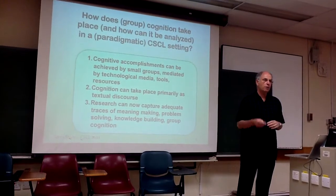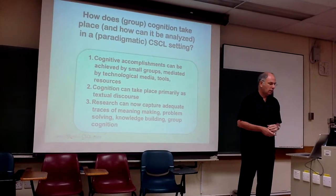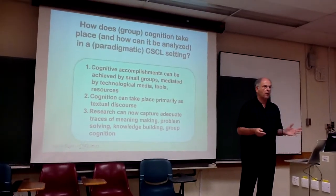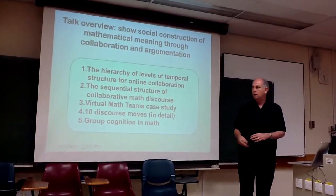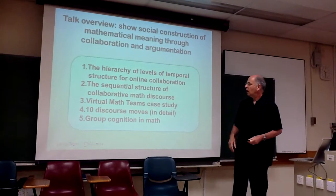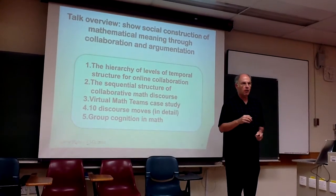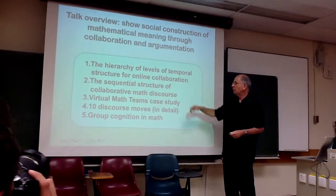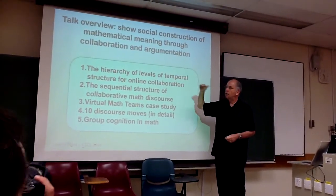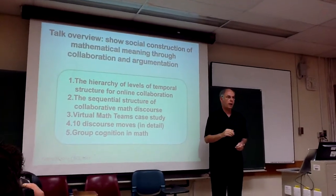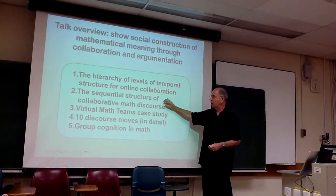By cognition, I have a concept of group cognition, which I'll explain in this talk — how does it take place and how can it be analyzed by researchers? I want to start out quickly presenting a hierarchy of levels that can be analyzed in collaborative learning. I think it's a natural hierarchy.